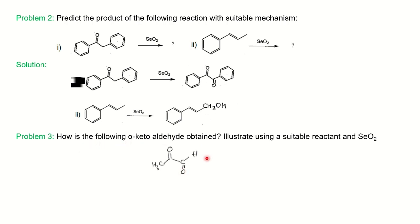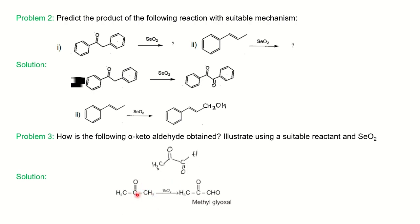The third question asks how the following alpha-keto aldehyde is obtained using a suitable reactant and SeO2. The product is given; you need to draw the reactant. We can take acetone as the reactant — with respect to the carbonyl group, you have two alpha carbons. On one of the alpha carbons, SeO2 converts the CH3 into CHO, giving methyl glyoxal. The same product is given to you. Apply the same mechanism already drawn to prove the formation of this product, and you can solve many more questions related to SeO2 involving active methylene, methyl groups, or allylic hydroxylation.